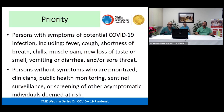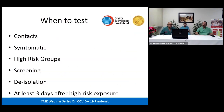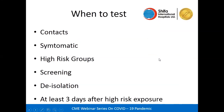The bottom line on who and when to test: those who are contacts of positive cases, those who are symptomatic, and those in high-risk groups such as patients with comorbidities. This includes contacts of positive cases, those with symptoms, those at high risk, and those being screened for pre-surgical or isolation purposes.